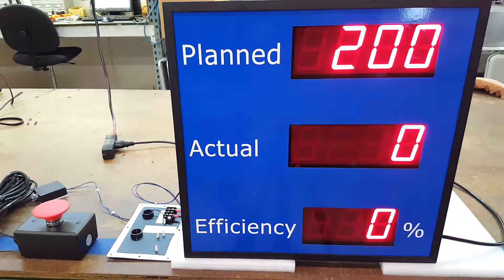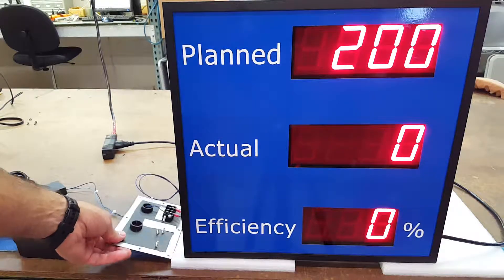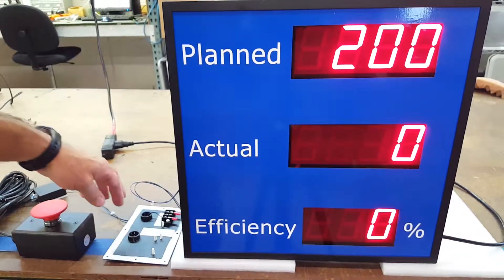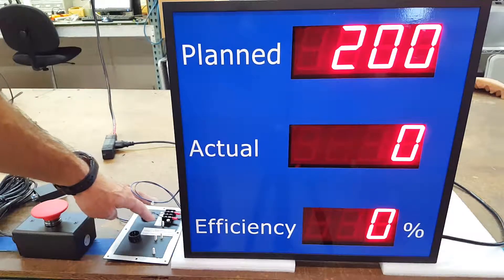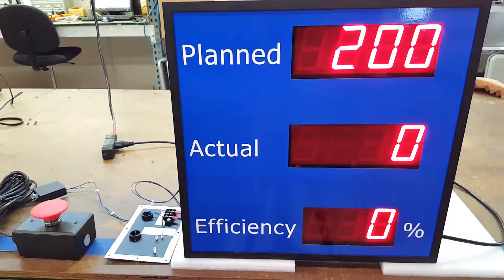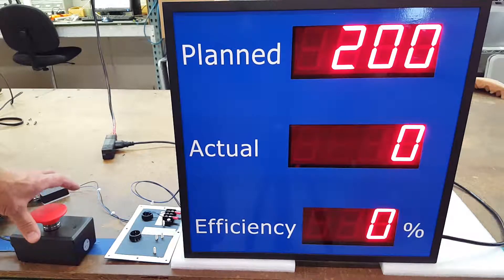To increment your actual count, there is a plate located on the back with terminal blocks. You can connect your contact closure, or this will take a 5 volt to 30 volt DC input pulse. Right now I have it connected to a large 60 millimeter palm switch.